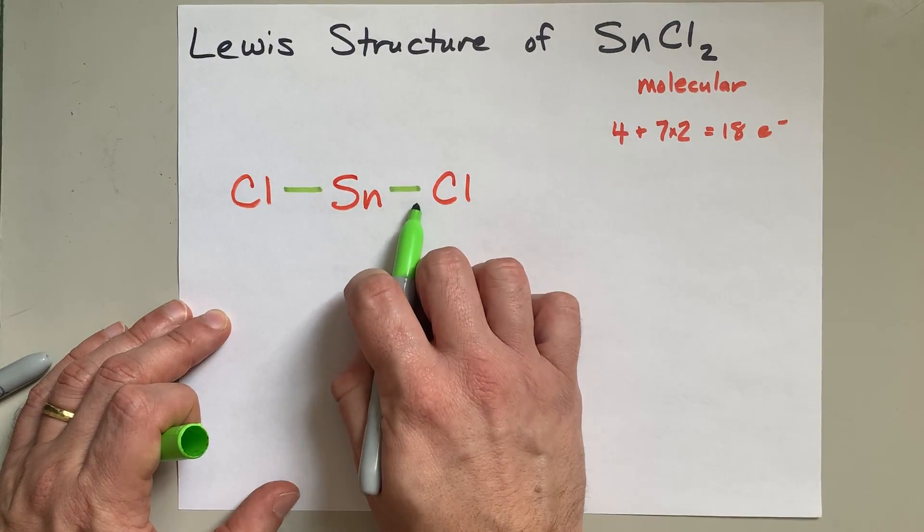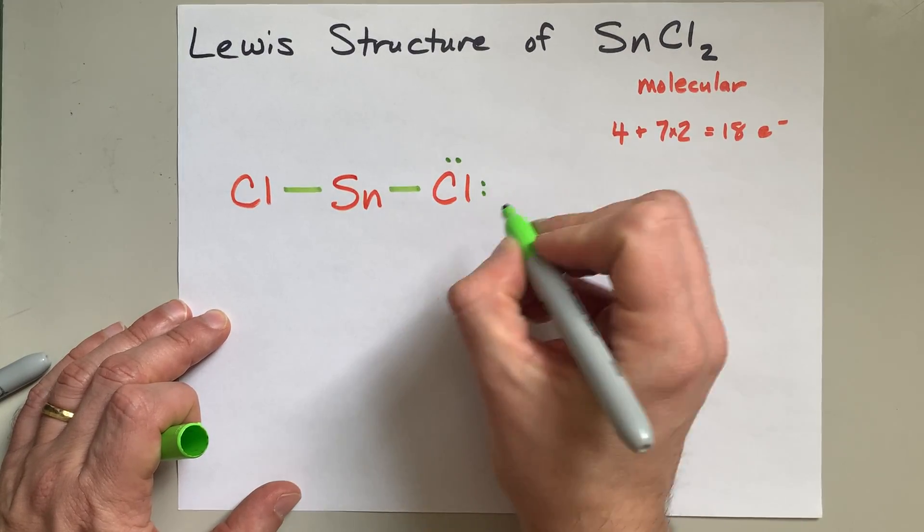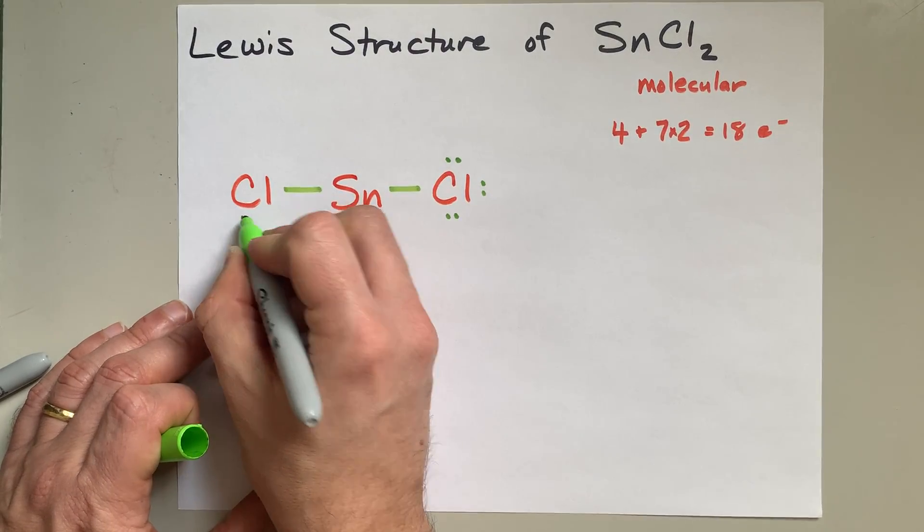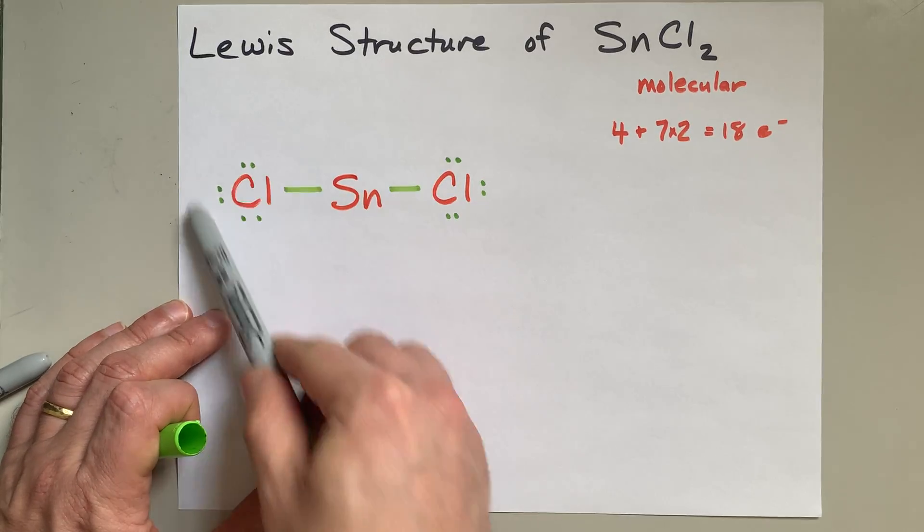Again, I have two, four already drawn. That's five, six, seven, eight, nine, ten. Complete octet. 11, 12, 13, 14, 15, 16, complete octet. Great.